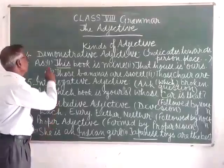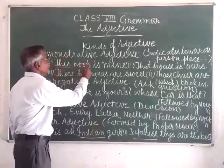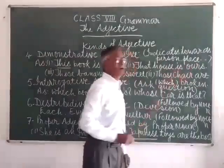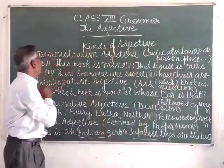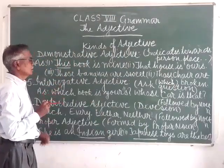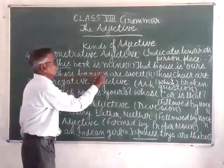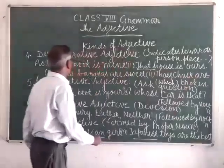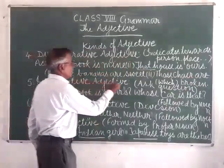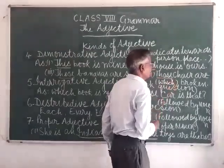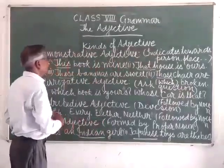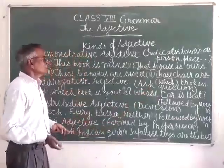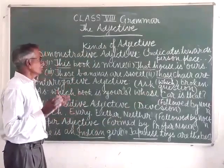Now we come to the fourth kind of adjective, that is the demonstrative adjective. It indicates a person, place, or thing. For example: 'This book is mine,' 'That house is ours,' 'These bananas are ripe,' and 'Those chairs are broken.' Here the words this, that, these, and those are indicating towards specific things or places, and are therefore demonstrative adjectives.